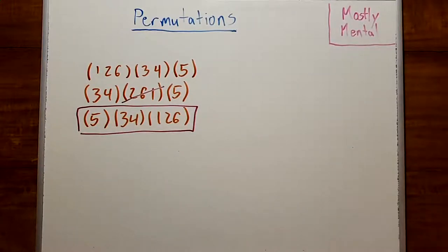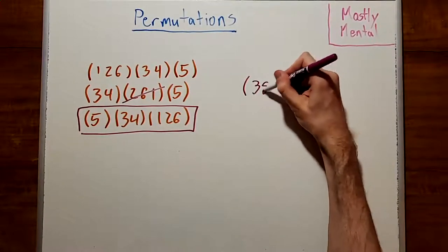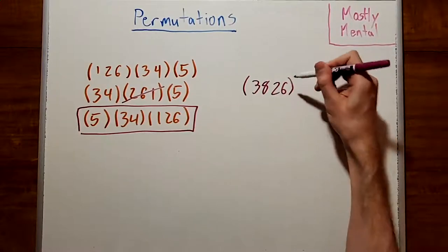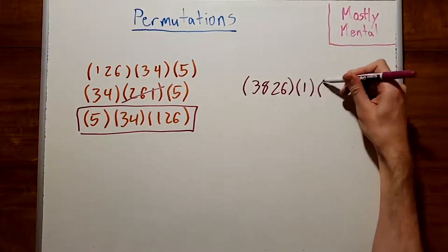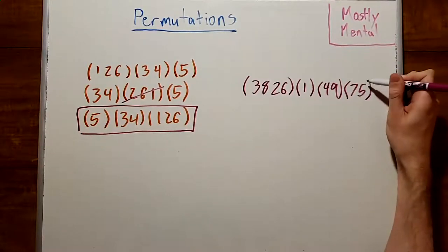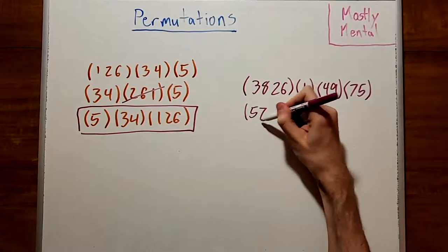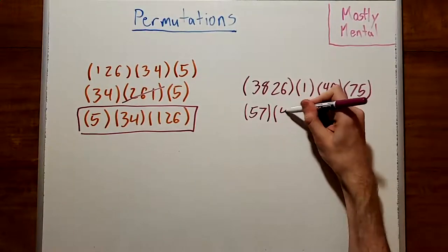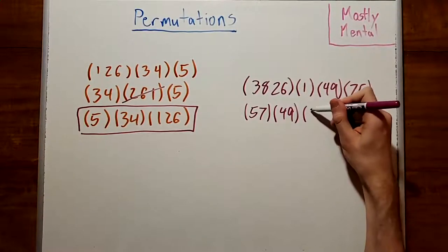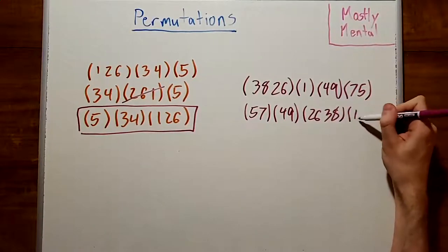If, for example, we had a permutation of the numbers 1 through 9, given by 3, 8, 2, 6, 1, 4, 9, 7, 5, we would get a canonical order of (5, 7)(4, 9)(2, 6, 3, 8)(1).